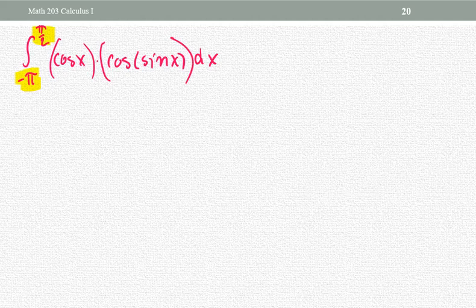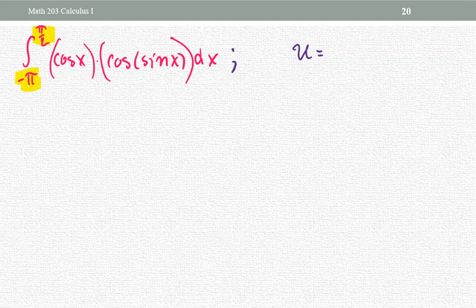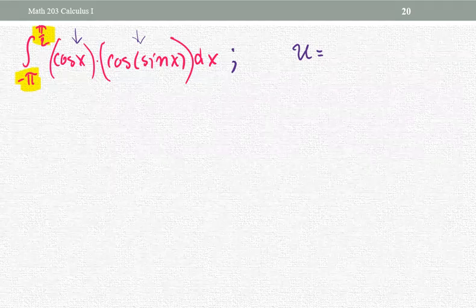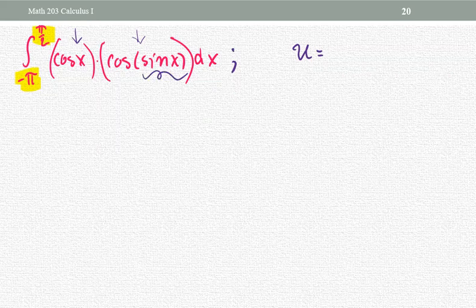What should be the u variable for this problem? Do you see the complicated form? We have two pieces: cosine x and cosine of something. When you read 'cosine of something,' that is the indication of a composite function. So the follow-up question is: what is the inner function? The inner function is sine x, so that is our choice for u.